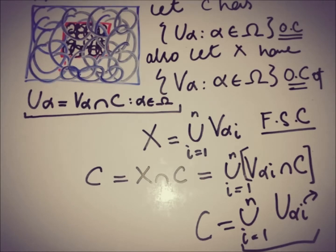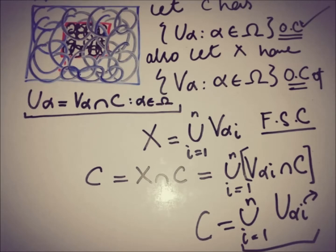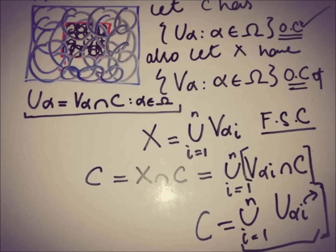We picked an open cover of the set C, and by proceeding using the definition of the compact space X and figuring out that there are finitely many elements whose union is equal to X, we arrive at the final result: this implies that C, which is a closed set of X, is a compact set as well.